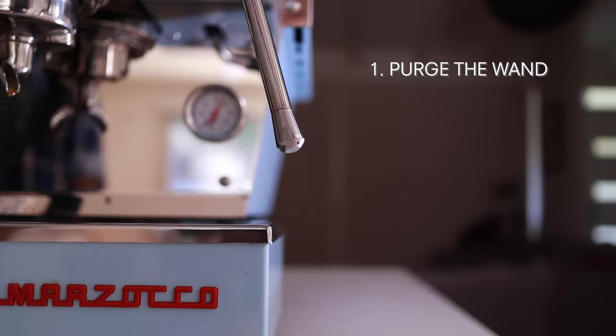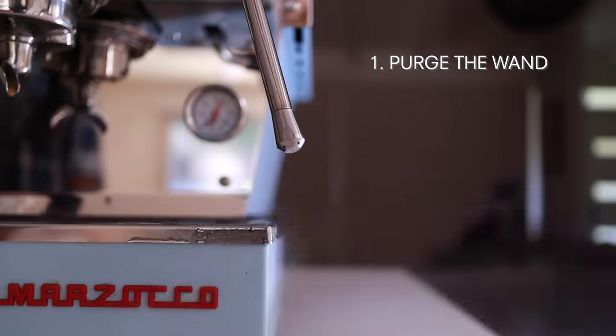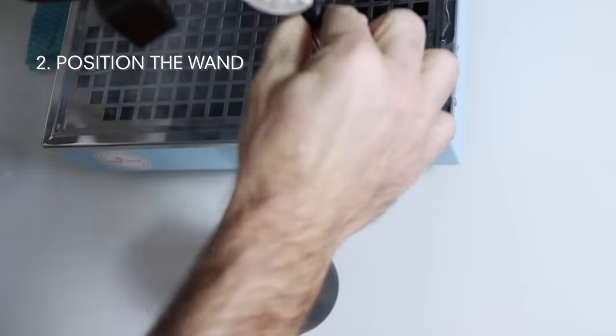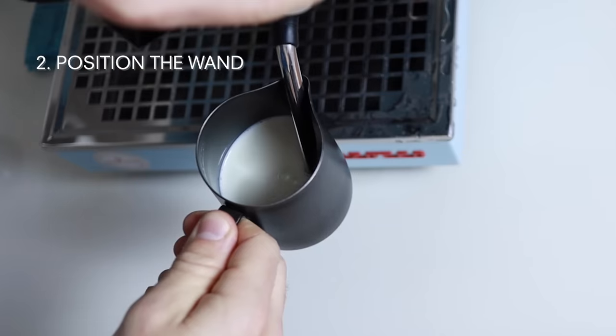So first up, you'll want to clear the steam wand with a quick blast of steam. Next, we want to submerge the tip of the steaming wand into the milk. Position the steaming wand off to one side of the jug on a slight angle. This is going to help create a whirlpool. I find it helps to rest the wand in the spout of the jug just like this.